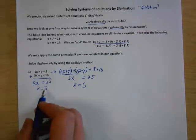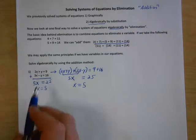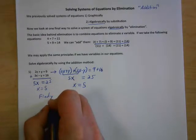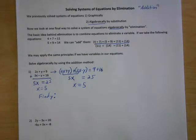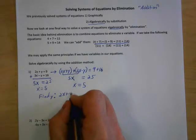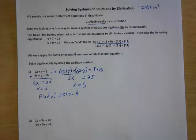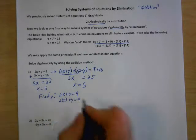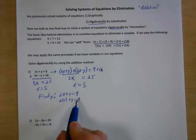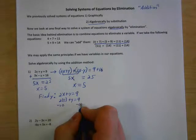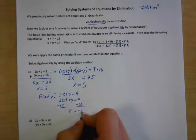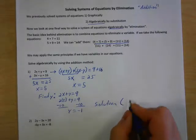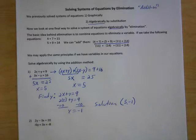We're not quite done yet because now we have x equals 5. We have to find the y value that goes along with it. We find y by substituting into either equation. Using 2x plus y equals 9, substitute 5 in for x: 2 times 5 plus y equals 9, so 10 plus y equals 9. Subtract 10 from each side and we get y equals negative 1. So the solution is (5, negative 1).